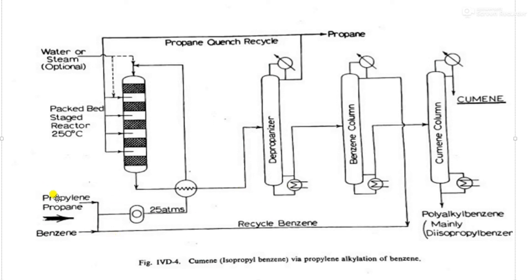Now let us discuss the flowsheet. Propylene and propane, obtained from the refinery process of naphtha steam cracking, are both mixed with benzene and sent to a compressor, where they are compressed to 25 atm. The mixture then enters a heat exchanger where the feed is preheated and sent to the packed bed reactor from the top. This packed bed reactor has an H3PO4 impregnated catalyst.